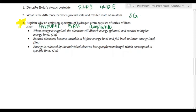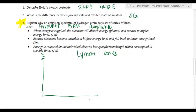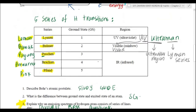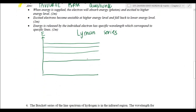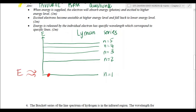When energy is supplied, the electron will absorb energy and get excited to a higher energy level. Here is an energy level diagram for the Lyman series. The ground state is n=1, followed by n=2, 3, 4, 5. So you have an electron at the ground state with n=1, and energy is given to it so the electron gets excited — for example, to n=5.